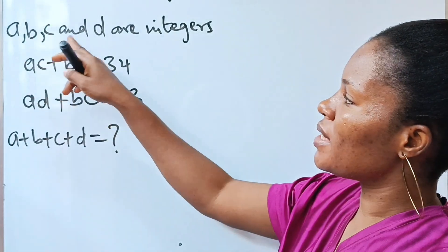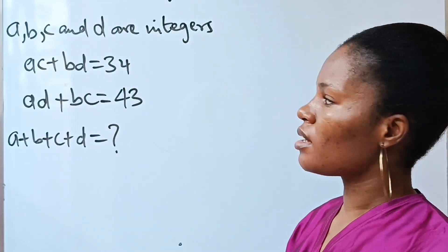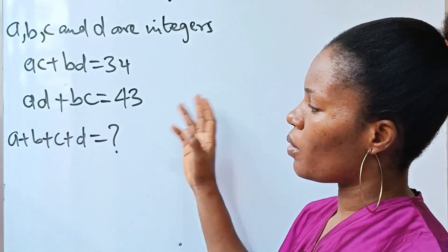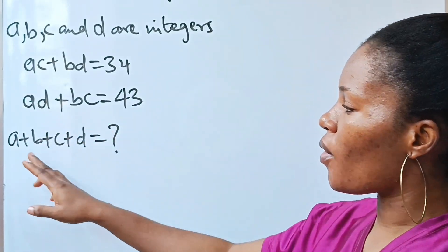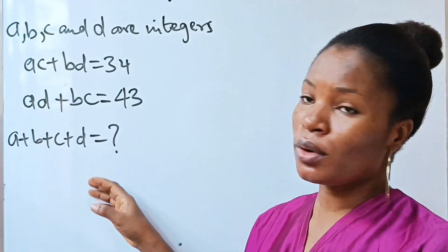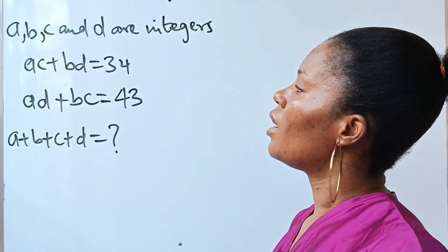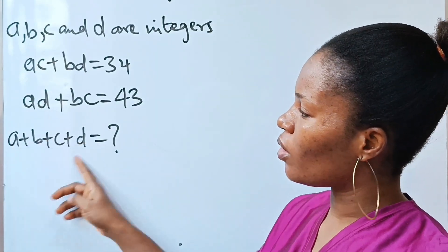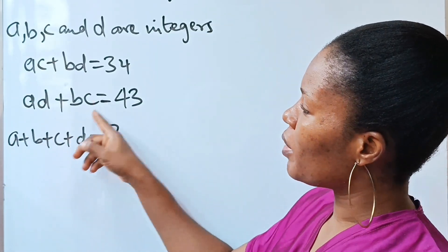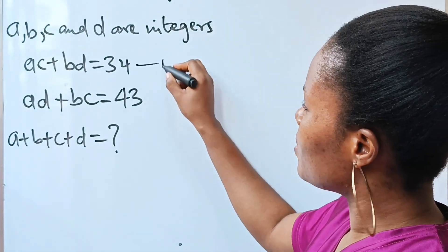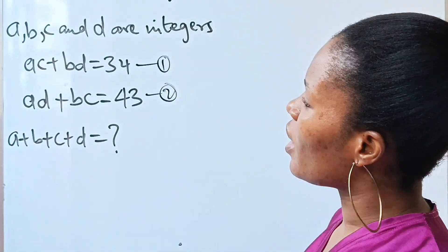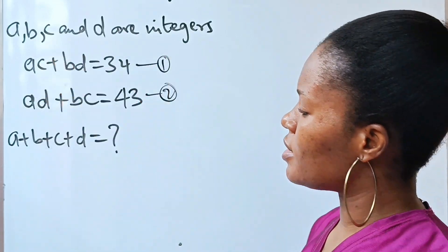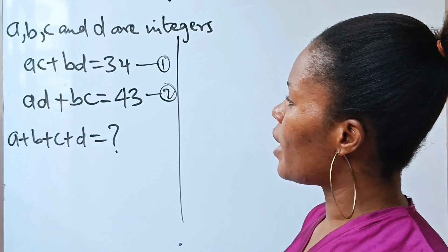We are told that a, b, c, and d are integers, and that ac + bd = 34, while ad + bc = 43. We are asked to solve for a + b + c + d. We have four unknowns but only two equations — there's a way around that. Let's call these equation one and equation two. As long as they are all integers, it's very possible.